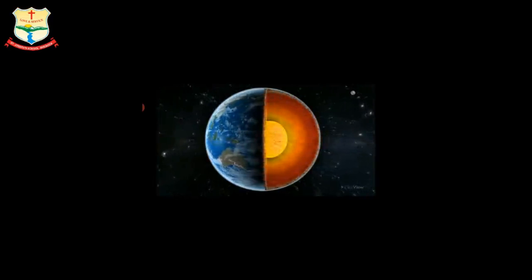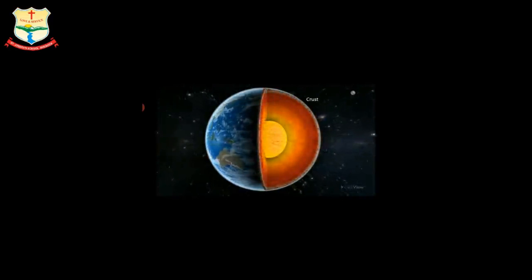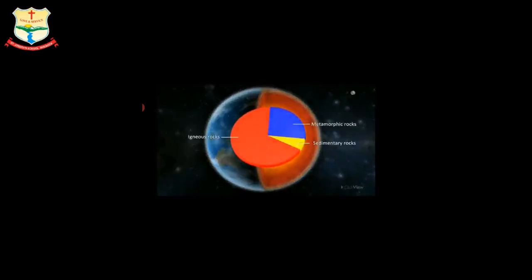The Earth's crust is made up of different types of rocks. The rocks which make up the maximum volume of the Earth's crust are called igneous rocks.